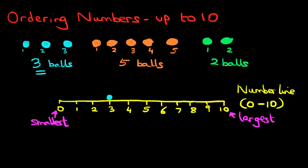Now how about the orange? There are five orange balls. Let's put another big dot — can you find number five? That's right, it's over here. Now how about the green balls? There are two. So let's find number two on the number line. There we go. So we have now plotted all three groups onto the number line.